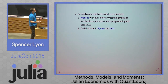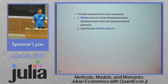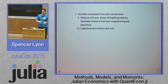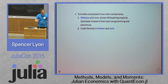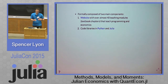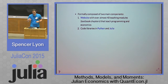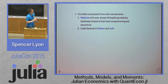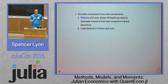QuantEcon is formally composed of two main components. First, there's a website containing about 40 different lectures or textbook chapters that teach programming as well as economics. They're geared towards advanced undergraduates, early graduate students, or practitioners and researchers looking to brush up on a certain skill or topic. The second component is code libraries written in Python and Julia. Not only do they implement all the examples from the website, but they go beyond that — they're geared towards efficient economic computing.